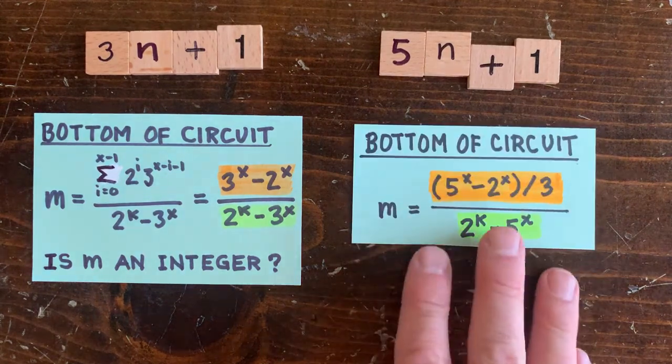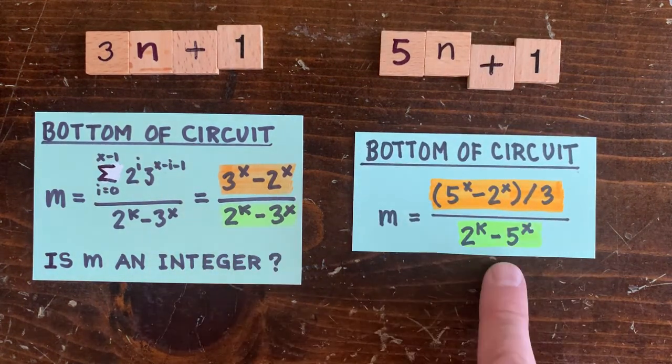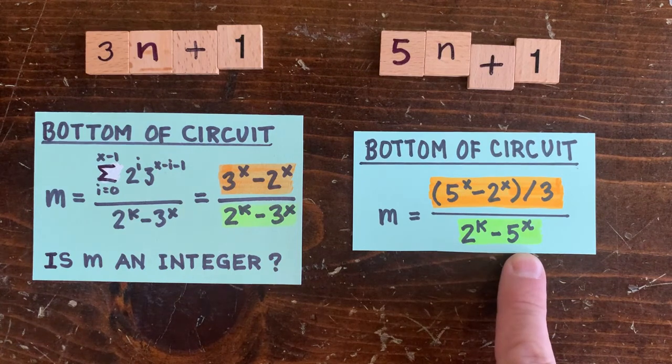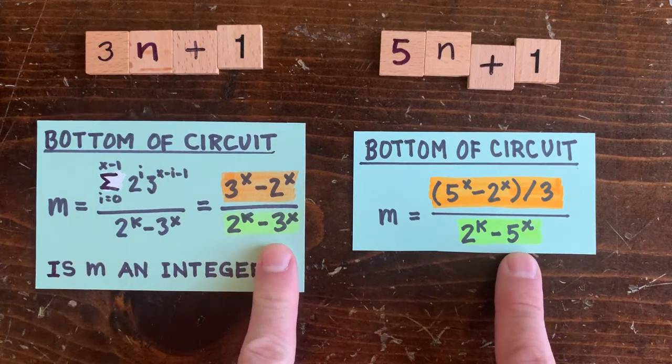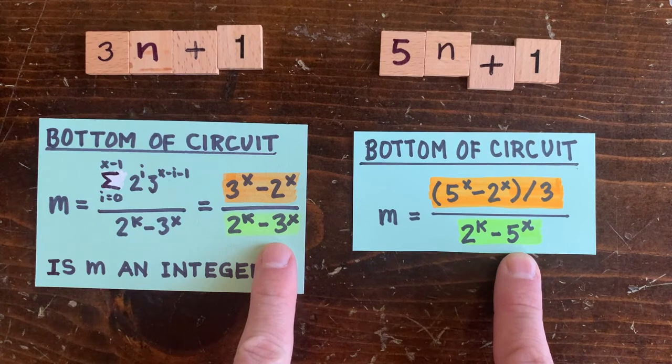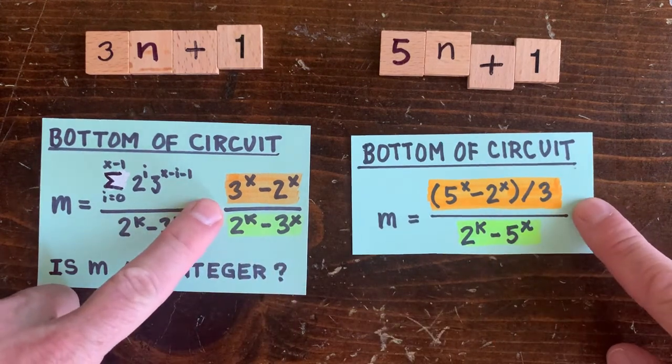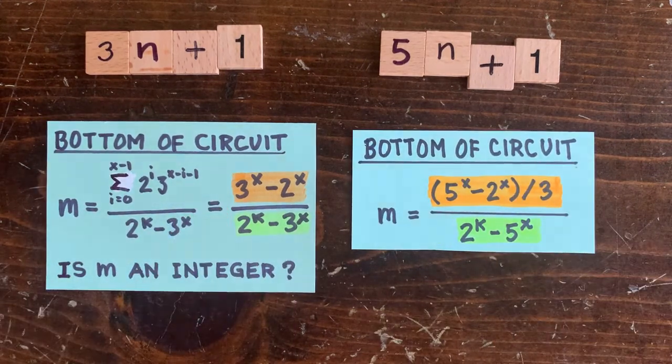For 5n plus 1, the denominator is 2 to the k minus 5 to the x. And you might think the numerator simplifies to 5 to the x minus 2 to the x, but it's actually 5 to the x minus 2 to the x over 3. It's a pretty funny thing.